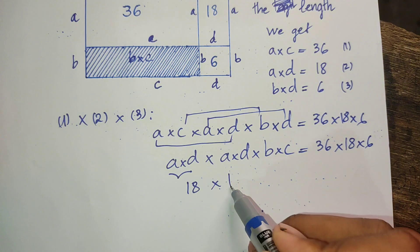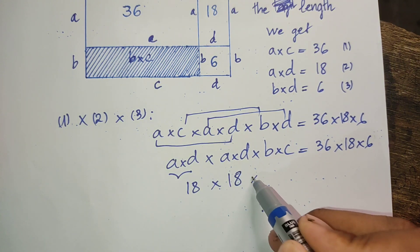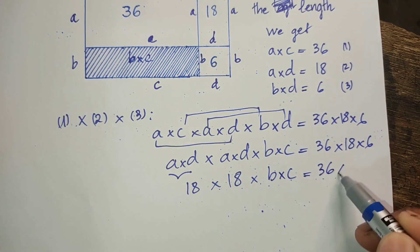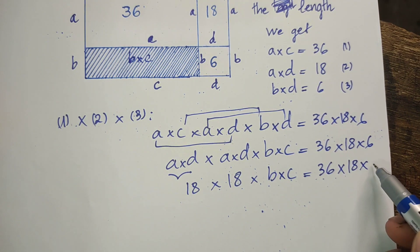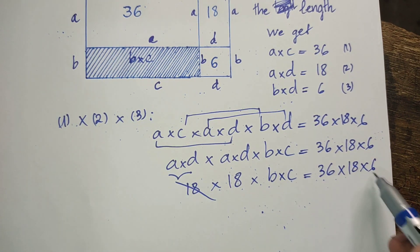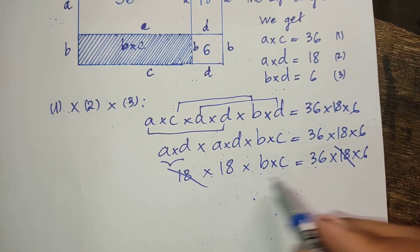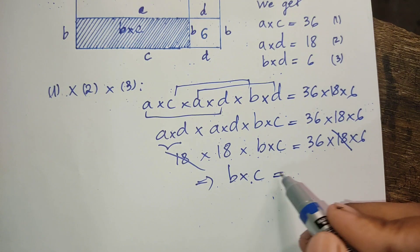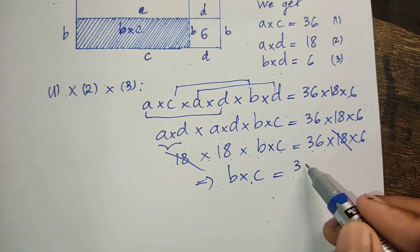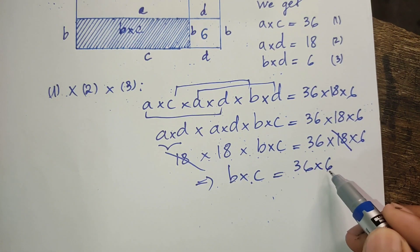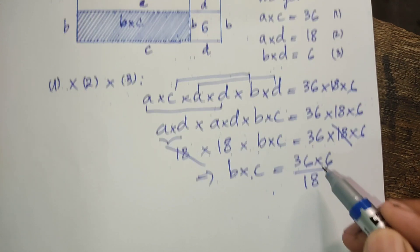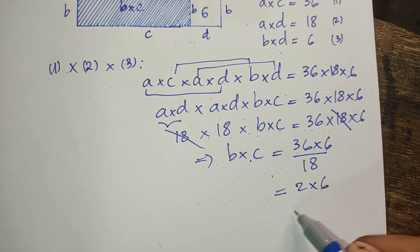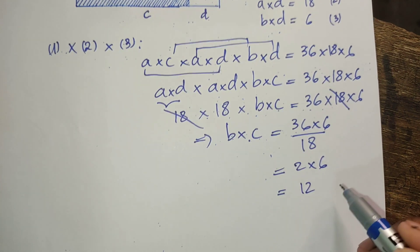And this we replace by 18. And multiply B and multiply C equals 36 multiplied by 18 multiplied by 6. So we simplify: B multiplied by C equals 36 multiplied by 6 divided by 18, which equals 2 multiplied by 6, which equals 12.